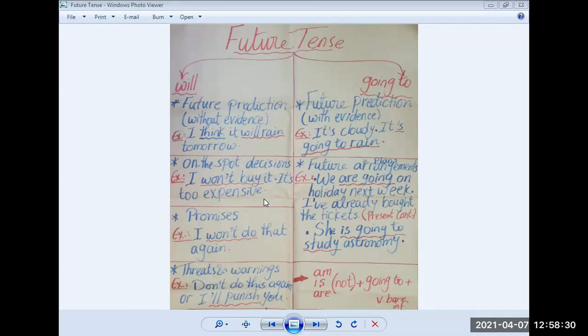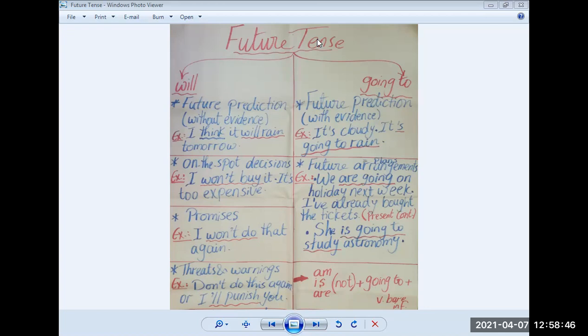If you can deduce the form of each one of them, we'll find out that going to is used with am, is, or are, verb to be, plus going to, plus verb in the bare infinitive. However, concerning will, you use will or won't, won't means will not, plus the bare infinitive.